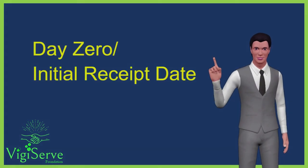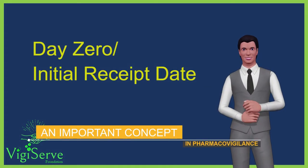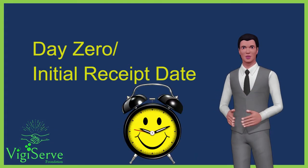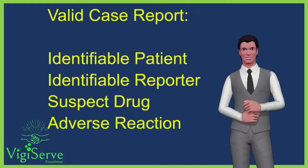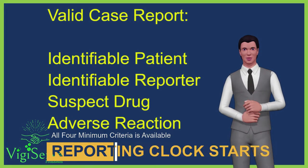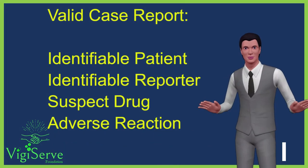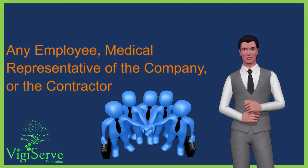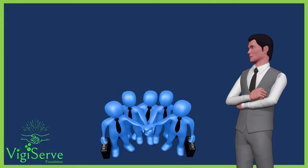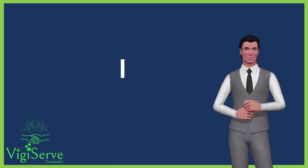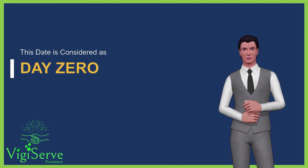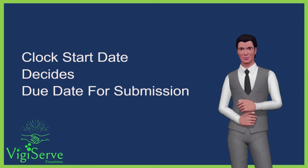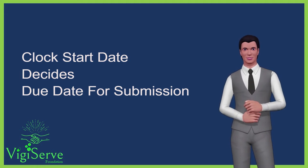Day zero, or initial receipt date, is one of the most important concepts in pharmacovigilance. The clock for submission of a valid case report starts as soon as the information containing the minimum criteria has been brought to the attention of any personnel of the pharma company or the marketing authorization holder, including medical representatives and contractors. This date is considered as day zero. It is necessarily the clock start date, and it decides the due date for submission of reports.